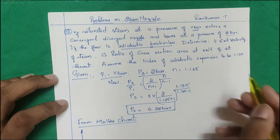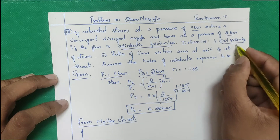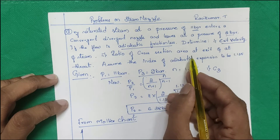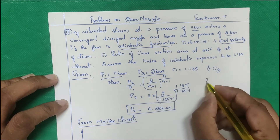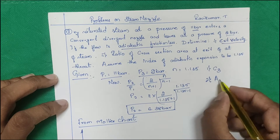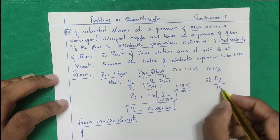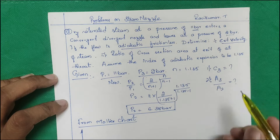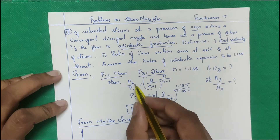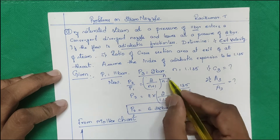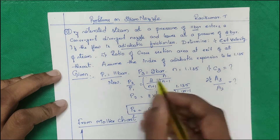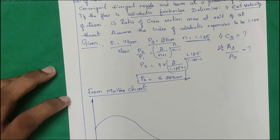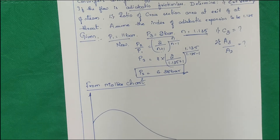Since entropy remains constant (isentropic), we need to determine the exit velocity c3. Also find the ratio of cross-section area at exit to throat (a3/a2). Before finding these, first find p2 using the formula: p2/p1 = (2/(n+1))^(n/(n-1)). Using this formula with adiabatic expansion, you get p2 = 6.38 bar. We shall see how to solve these problems using the Mollier chart.